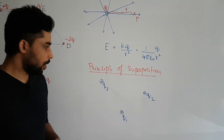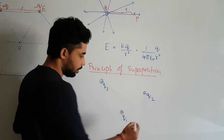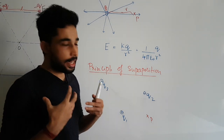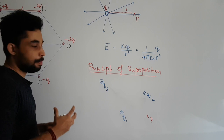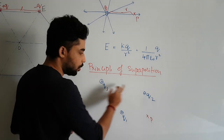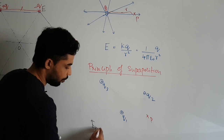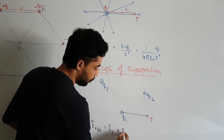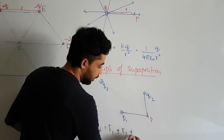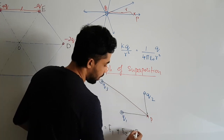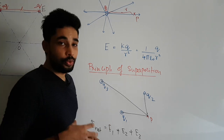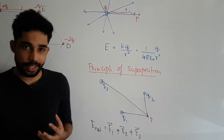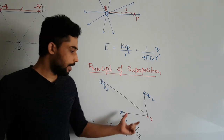Now, what if we have more than one charge in space? Consider point P and we need the electric field there. The principle of superposition tells us the net electric field at P is simply the vector addition of the electric fields due to each individual charge: E net equals E1 plus E2 plus E3. Since these are vectors, you must add them vectorially, considering their directions.